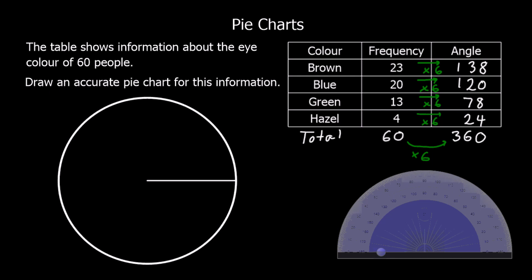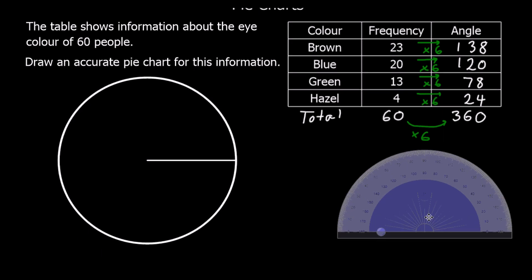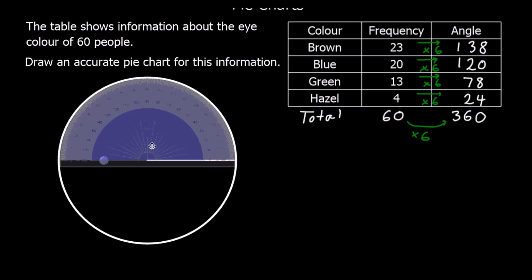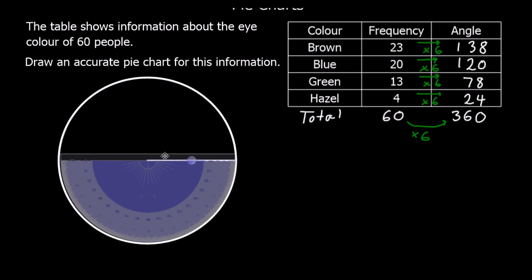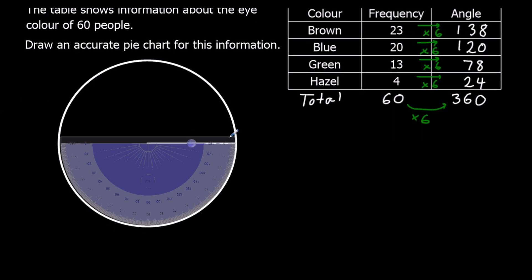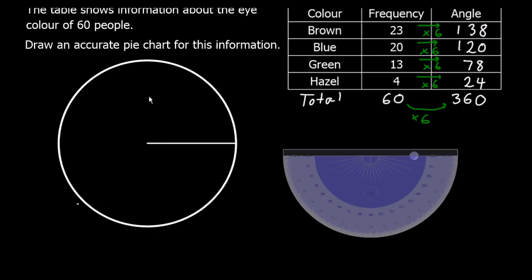Now we're going to grab the protractor and draw these angles on. We line up the centre of the protractor with the centre of the circle. I'm going to spin it round until 0 is lined up with the line we've been given. We're going to do brown first, 138 degrees. So 0 all the way round to 138. Then we're going to get the ruler and draw a straight line to complete the slice.